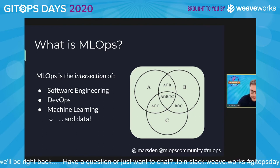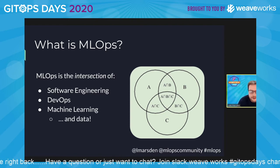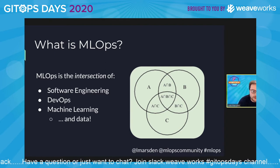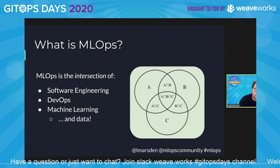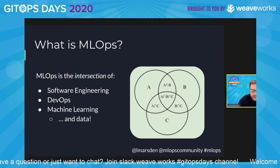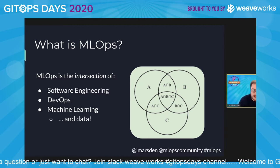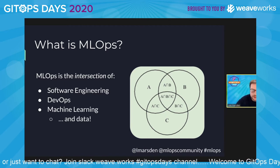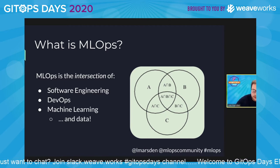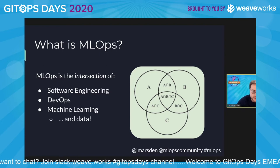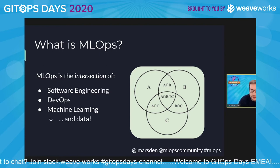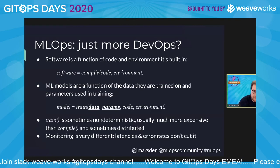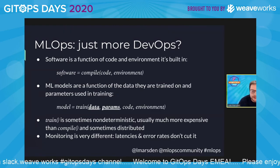Production DevOps systems do operate on data — databases, key-value stores and so on — but the thing that's unique and different about machine learning pulling data in is that data is actually used to create the models that are deployed into production. It's not just that your production system is operating on data. That's an important distinction.